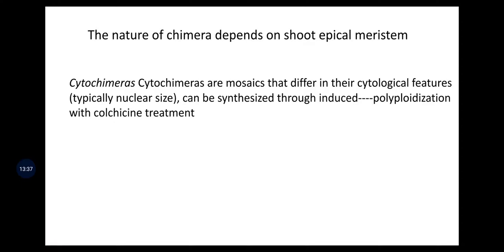The nature of chimera depends on the shoot apical meristem. There is one kind of chimera known as cytochimera, which are mosaics that differ in their cytological features — typically in the nuclear size — and can be synthesized through induced polyploidization with colchicine treatment. When we give colchicine treatment for doubling of the chromosome number, cytochimeras are observed.